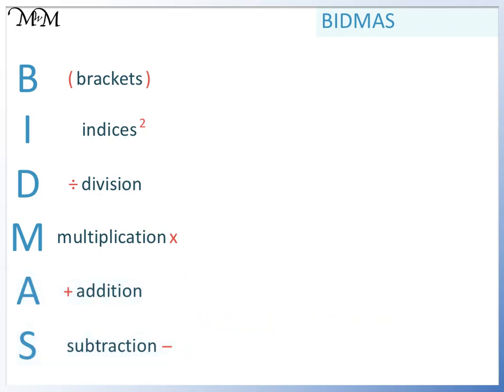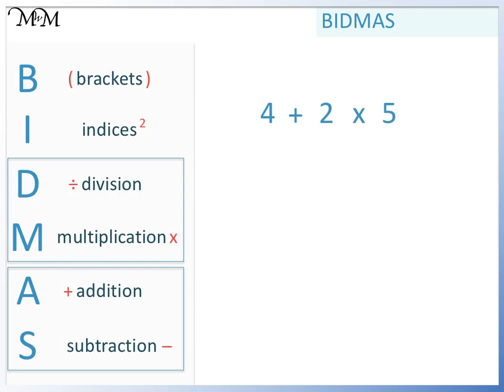Let's see how we use BIDMAS in our calculations. Here we have 4 plus 2 times 5. We will use BIDMAS to find out the order in which we should carry out the calculation. We check B for brackets. We don't have any. There are no indices. There's no division. But we do have multiplication. So we do this first.